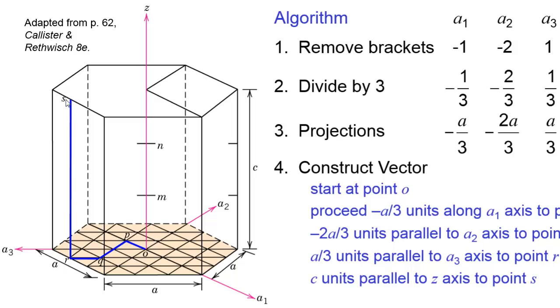You'll notice this point S is one third along this lattice parameter A here and two thirds from this point. And then we're going to make this direction go from our starting point to our ending point from O all the way up to S. This is the one bar, two bar, one, three direction.